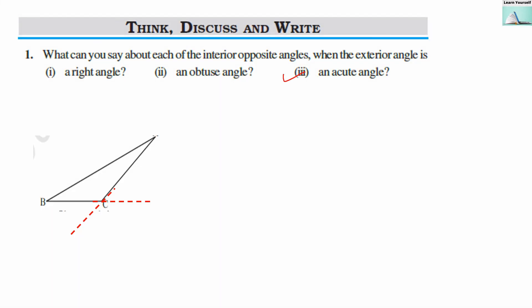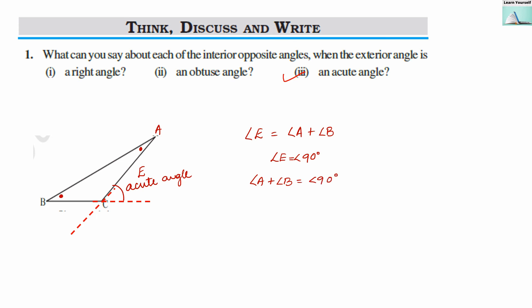Now the third case: if the exterior angle is an acute angle, what are the interior opposite angles? In triangle ABC, with interior opposite angles A and B, if exterior angle E is acute, then angle E equals angle A plus angle B. Since angle E is less than 90 degrees, the sum of angle A and angle B is also less than 90 degrees. There is only one possibility: both angles must be acute angles.